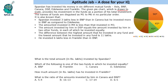It is given that he invested three lakhs less in BNP than in Canara, but invested more in BNP compared to Edelweiss. So Canara > BNP > Edelweiss. Since he invested three lakhs less in BNP than in Canara, Canara = BNP + 3. We are also given that the amount invested in M4 is less than that invested in M3.